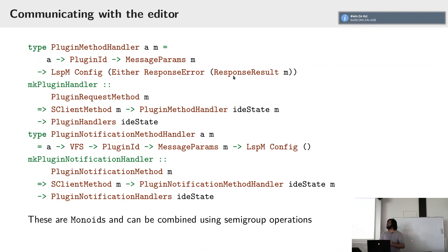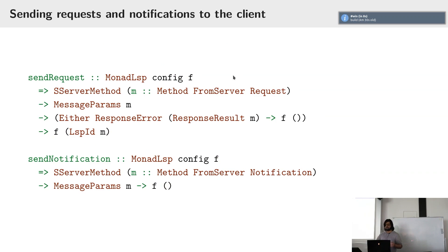The other part of HLS, which lives inside the picture I showed, is the build system part. We have to manage a lot of state: lots of files, lots of modules, lots of different types of results, lots of plugins with their own intermediate state. And things keep changing — the user edits files, auto-generated files are written and read.